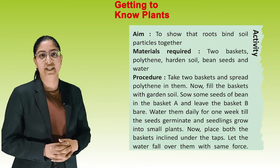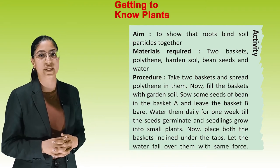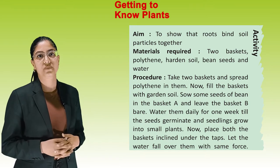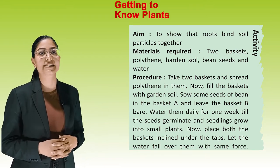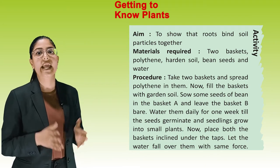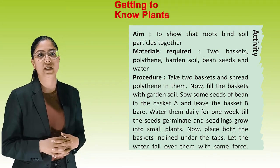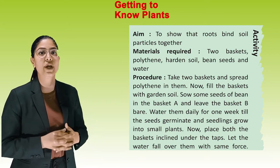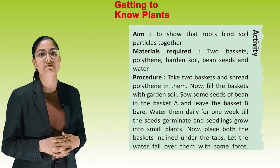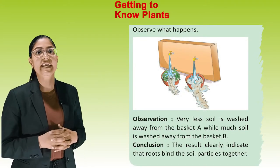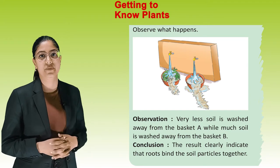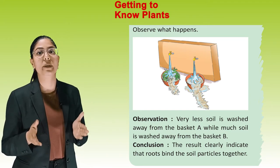Activity 3 — Aim: To show that roots bind soil particles together. Materials: Two baskets, polythene, soil, bean seeds and water. Procedure: Fill both baskets with garden soil; sow bean seeds in basket A and leave basket B bare. Water them daily for one week. Place both baskets inclined under a tap with water falling with the same force. Observation: Very little soil is washed away from basket A while much soil is washed from basket B. Conclusion: Roots bind the soil particles together.